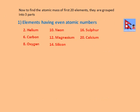Now, to find the atomic mass of the first 20 elements, they are grouped into three parts. The elements you are observing in the video now are the elements having even atomic numbers. So the elements with atomic numbers 2, 6, 8, 10, 12, 14, 16, and 20 are grouped together as elements having even atomic numbers.